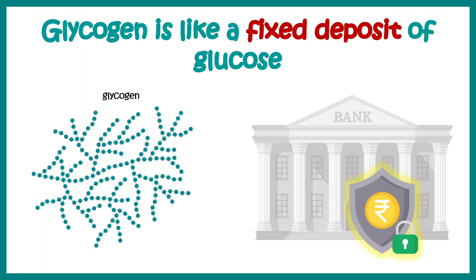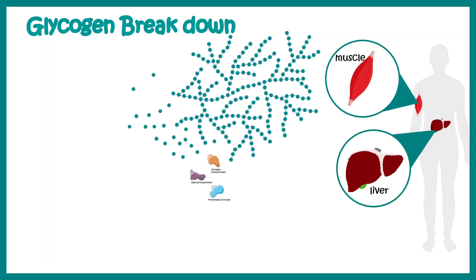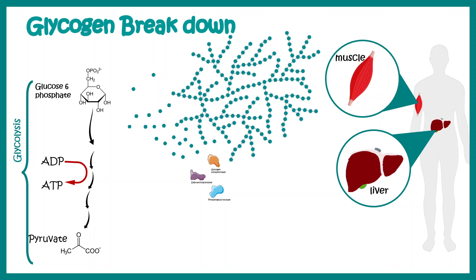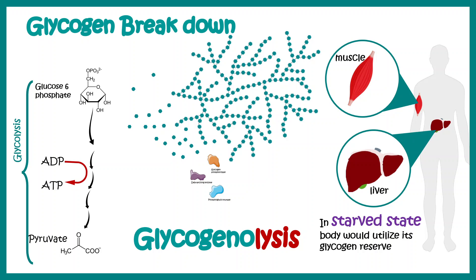Glycogen is like a fixed deposit of glucose — when we have too much money we store it in the bank for the future. Glycogen is stored for the future, and whenever we need energy it can be broken down in muscle and liver. The end product of this breakdown is glucose-6-phosphate, which can be channeled into the glycolysis pathway to generate energy. This process of breaking down glycogen is known as glycogenolysis.